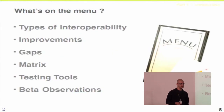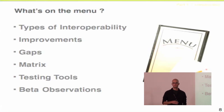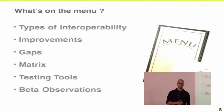What we're going to talk about today is different types of interoperability problems, some improvements we've done in the last year, the gaps that are still left open, something called the Matrix which I've been working on for two or three months alongside the guys from Cinerzip, some testing tools we've developed, and beta observations from our new content authoring tool based on LibreOffice that Shaka presented yesterday. We've had feedback from users about interoperability, and I'd like to share that.